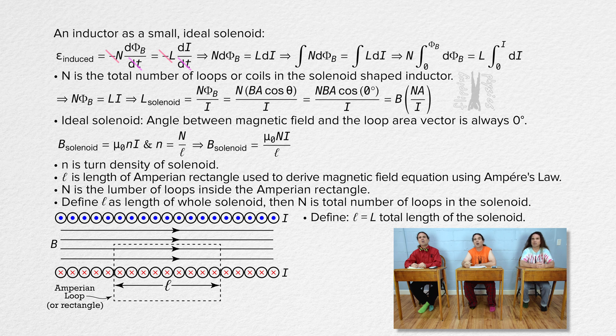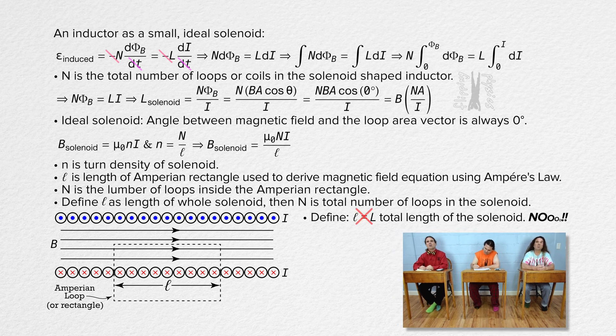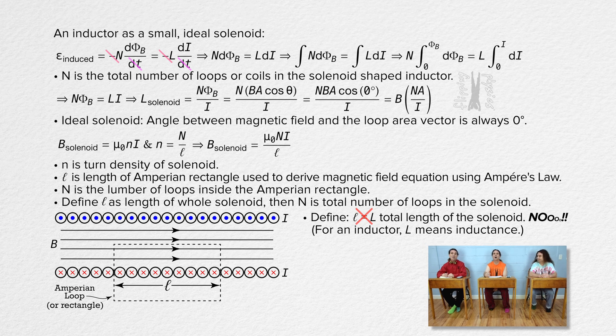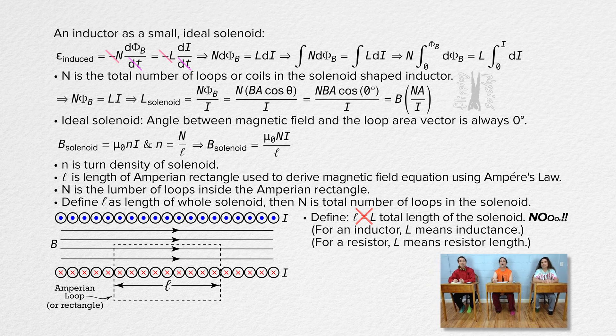So, rather than curly L, let's use capital L. That is not the best idea. Oh. Yeah. Capital L means inductance. Let's leave it as the curly L. However, we know it is the length of the whole solenoid. Right. And let's not confuse that with capital L for a resistor, which is the length of the resistor. We're kind of terrible with symbols. Yeah. Yeah.